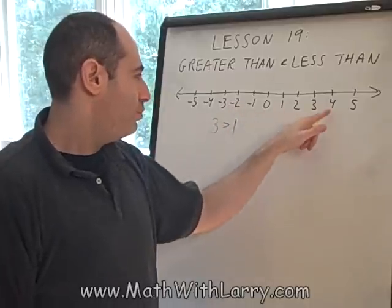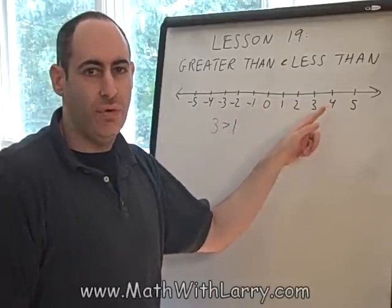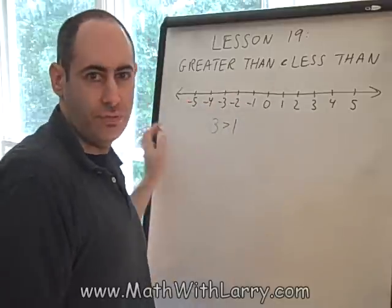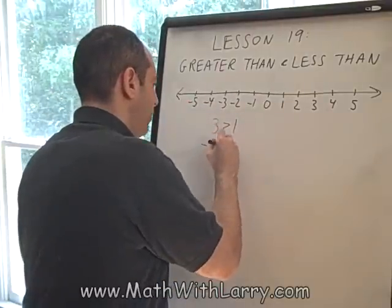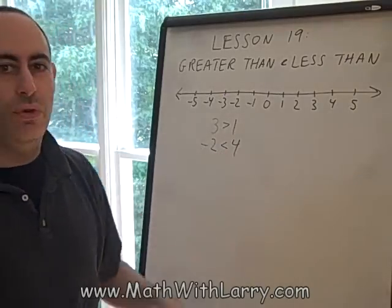We can see that negative 2 is on the left of 4. That shows that negative 2 is less than 4 just because it's to the left. We can write negative 2 is less than 4, and again, in a moment, we'll get back to talking about that symbol.